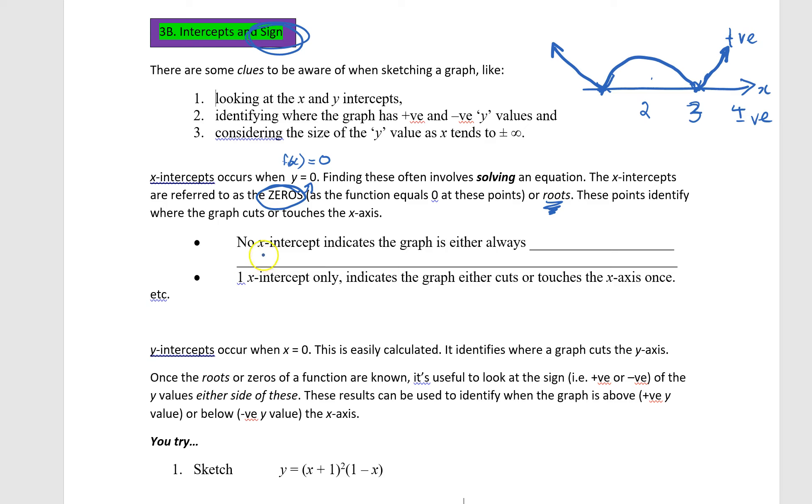And these points identify where the graph touches or cuts the x-axis. If you find there are no x-intercepts, then we say that the graph is either always positive or negative. And so you can have functions like this one. And yes, there'd be no x-intercepts because it's clearly not cutting the x-axis, and it is always negative.